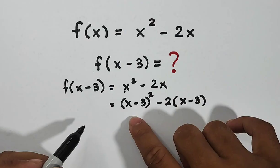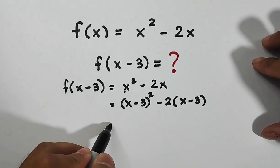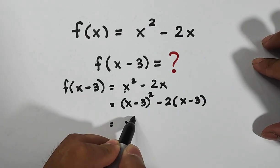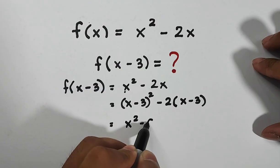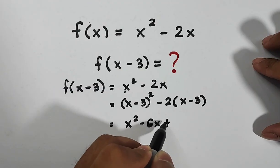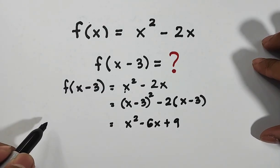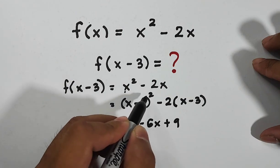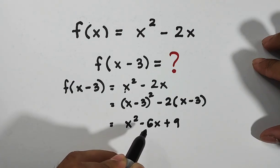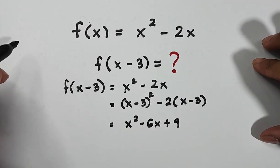Here guys, (x - 3) squared that is equal to x squared minus 6x plus 9. So that's how (x - 3) squared becomes x squared minus 6x plus 9.